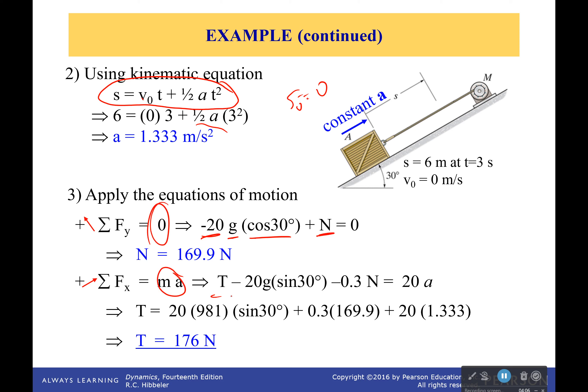So that would be equivalent to the tension minus 20 times gravity times sine of 30 minus 0.3N. And that's going to be equal to 20 times acceleration. And I plug all that in there and I get that my tension would have to be 176 newtons.